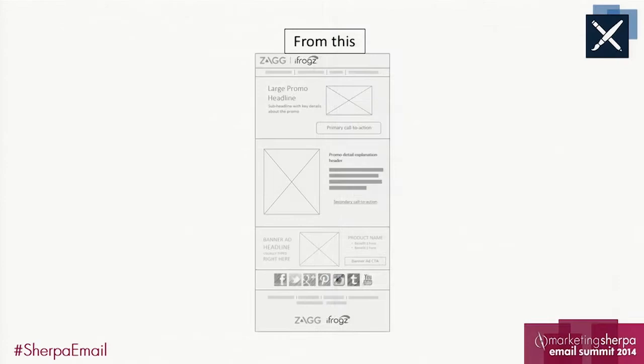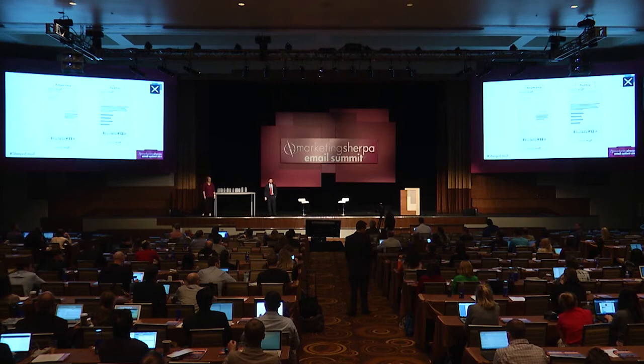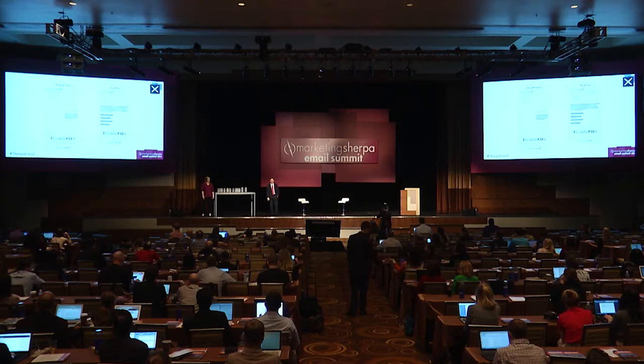Why did you think she made all of those changes? Knowing what you know about the campaign and the template and its role, why do you think she made those changes? Anybody? The focus of an email is a click, so getting one primary call to action keeps it very focused on what you want the user to do.